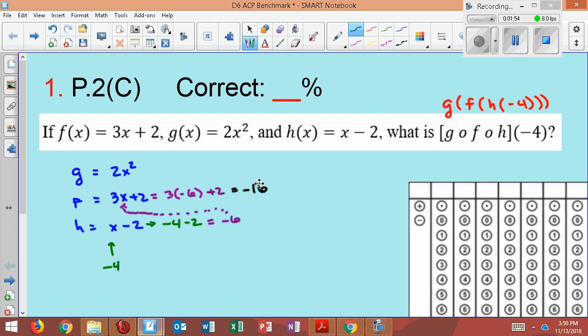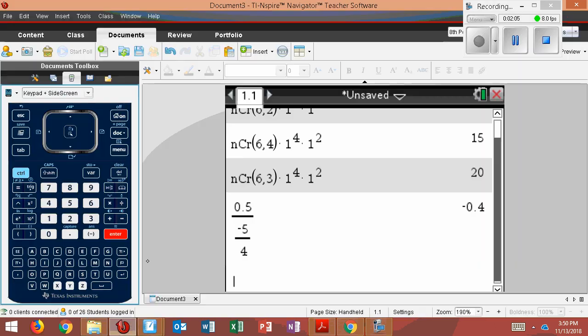So now what do I do with the negative 16? I take that, and I plug it in right here. And so I'd have 2 times negative 16 squared. I'll go to my calculator, let's make sure we do this correctly.